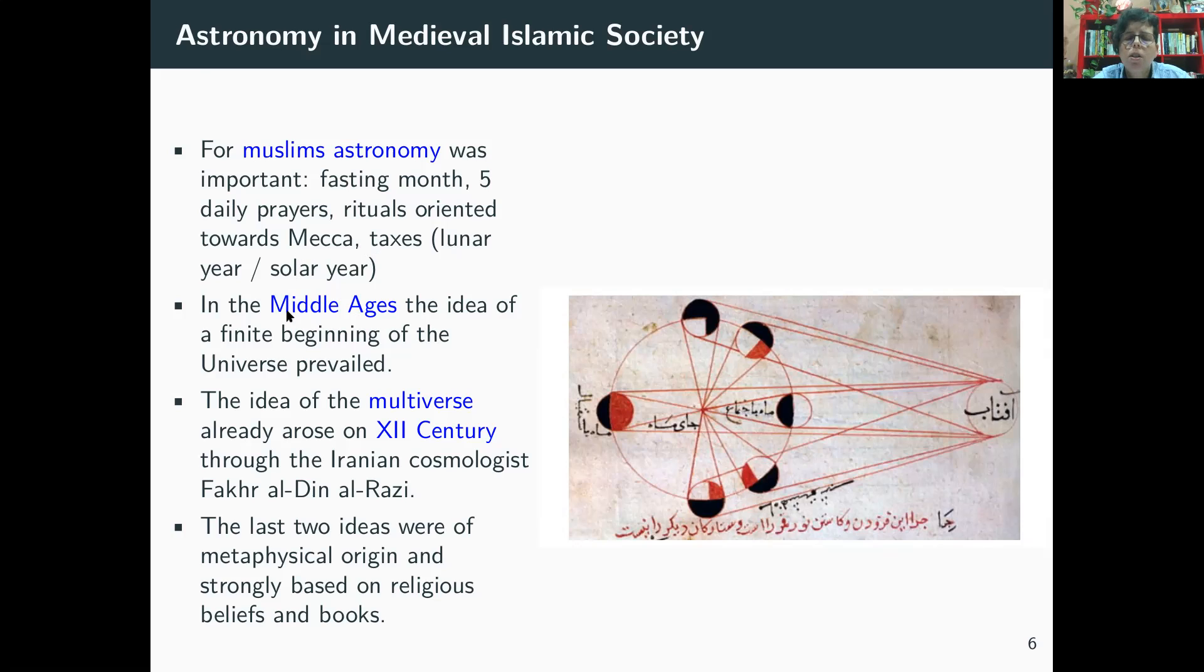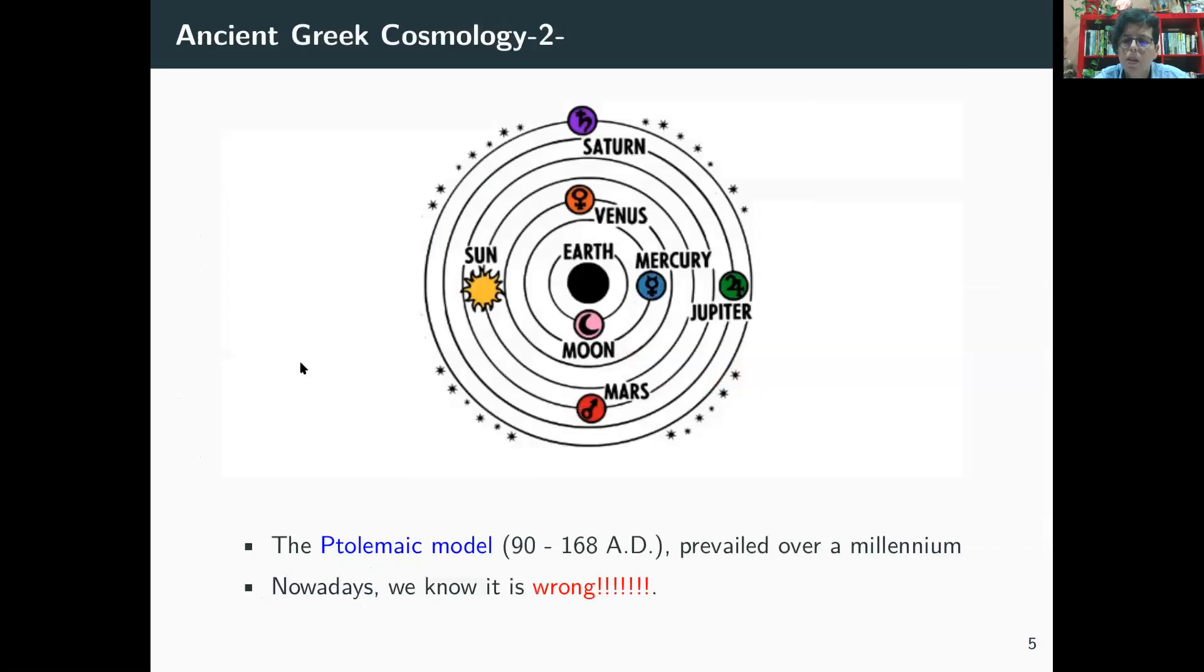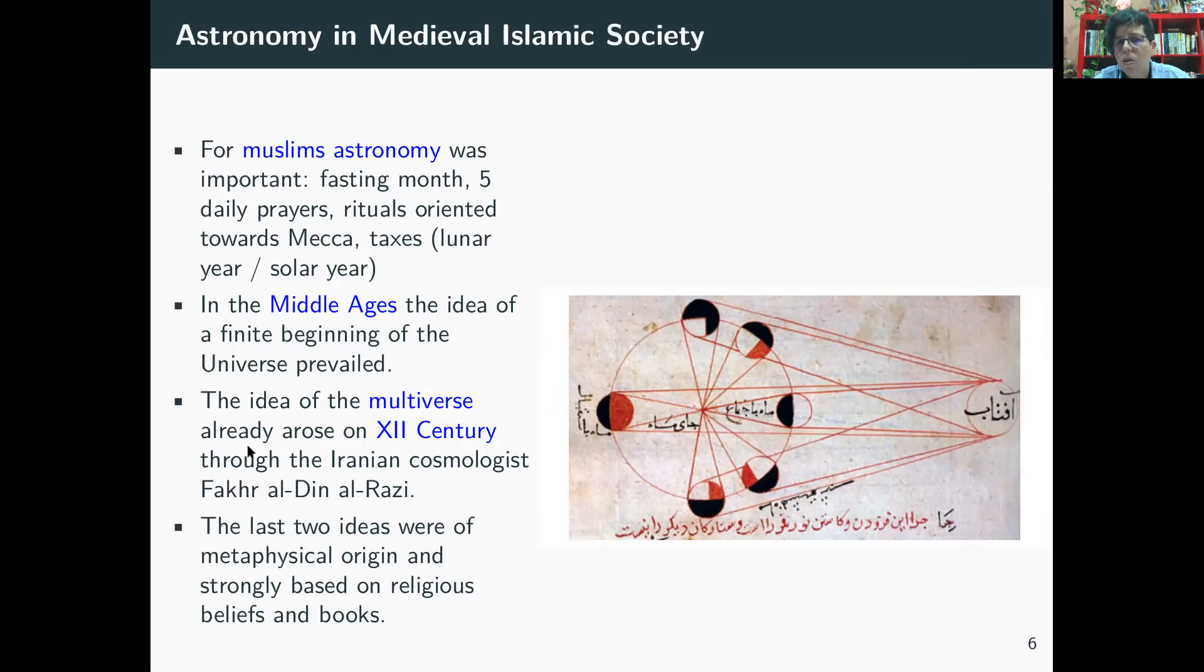Now in the middle age, they had the idea that there was a beginning for the universe, unlike what Aristotle was saying. This was not based on any scientific facts. It was simply coming from religion. So all the monotheistic religions believe there was a beginning for the universe. Then the idea of the multiverse was already present in the 12th century through the Iranian cosmologist Fakhddin al-Razi. Again, this idea had a metaphysical origin. It was based on religious belief. Nowadays, we know that there is the possibility of having a multiverse and it's a scientific prediction coming, for example, from inflation or from string theory.